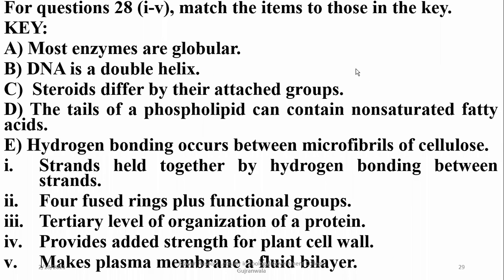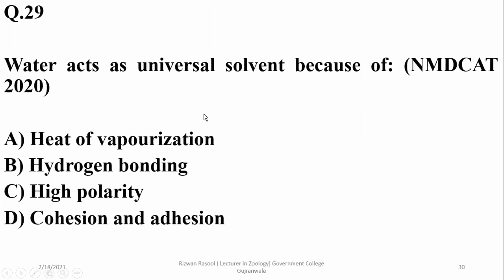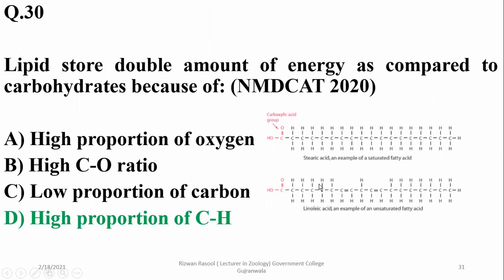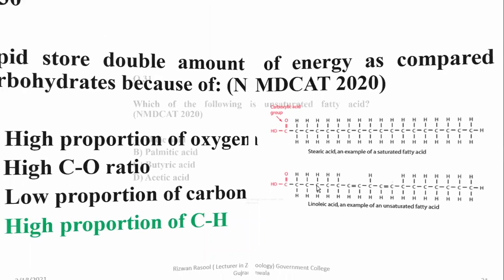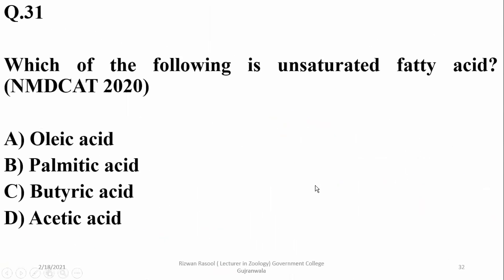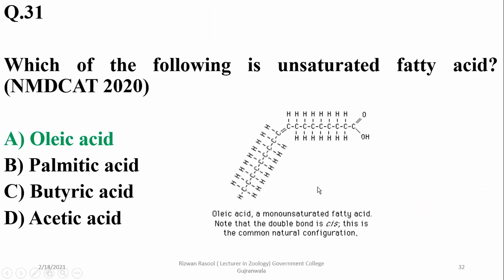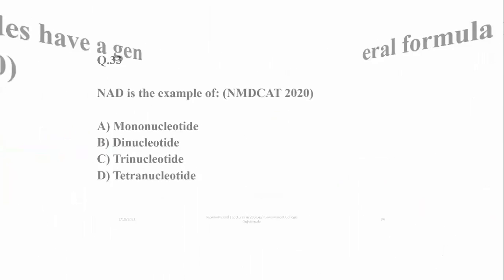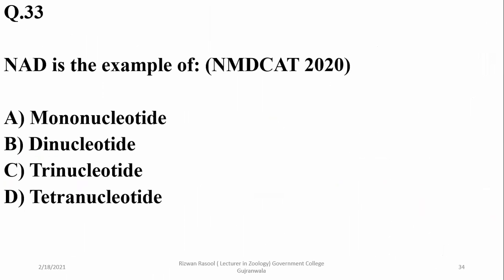Question 29: Water acts as a universal solvent because of high polarity. Lipids store double the amount of energy compared to carbohydrates due to the high proportion of carbon-hydrogen bonds and lower proportion of oxygen. Which of the following is an unsaturated fatty acid? It is oleic acid. Monosaccharides have a general formula represented by CnH2On. The example of a dinucleotide was also discussed.